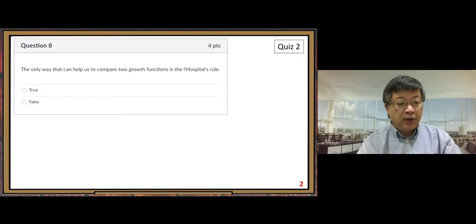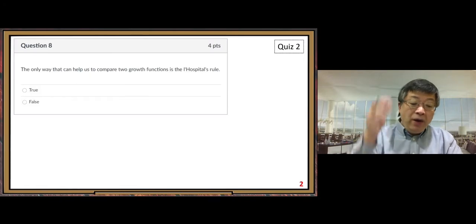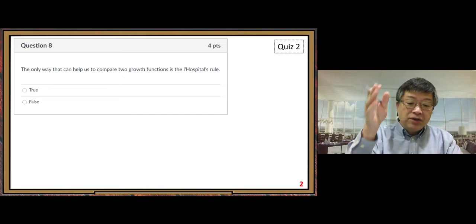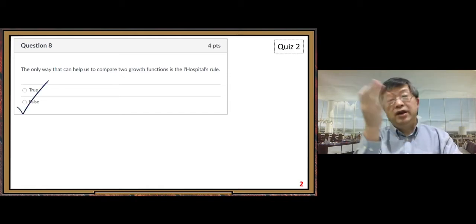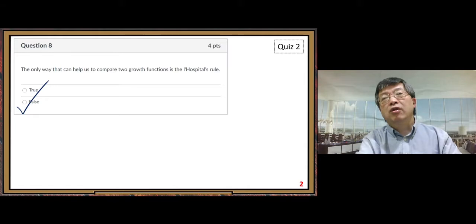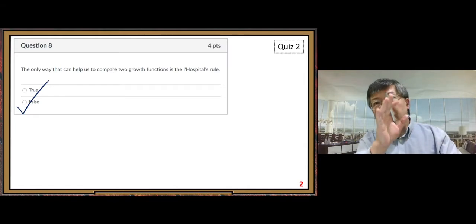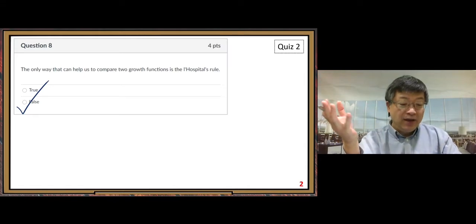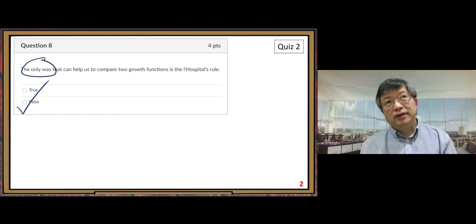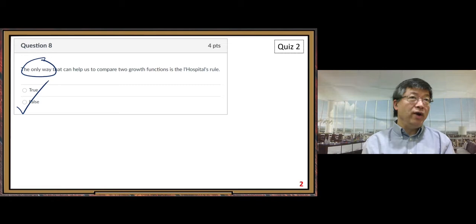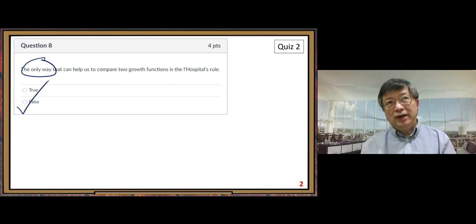Next one, number 8. The only way that can help us to compare two growth functions is L'Hôpital's rule. False. If you just go back and look at the explanation of question 7, we already answered that. The only way—not the only way. Not the only way. Another way: inequality way, upper bound, lower bound way.